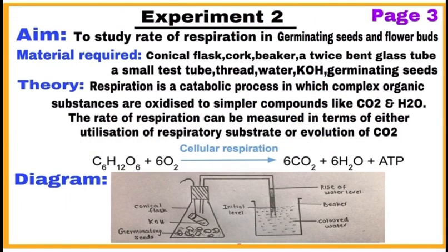Page number 3: start writing your minor experiment on this page. Write the aim of the experiment — to study the rate of respiration in germinating seeds and flower buds. Then write material required, theory, and make a labeled diagram with pencil. Again, don't write the procedure.